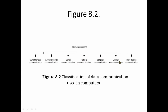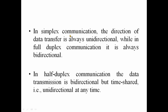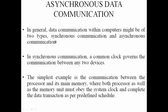This is simplex, duplex, and half duplex. In simplex, the direction of data transfer is always unidirectional. In full duplex, we can communicate in both directions simultaneously. In half duplex, communication is two-directional but only one direction at a time — you can send in one direction, then in the other direction.